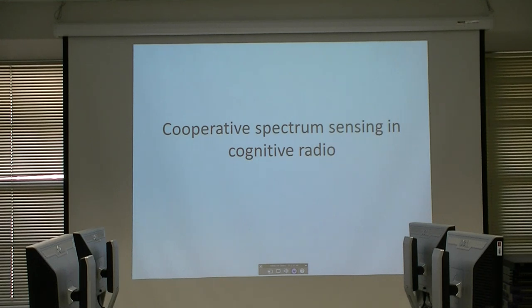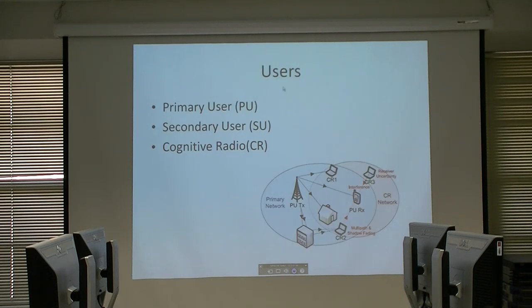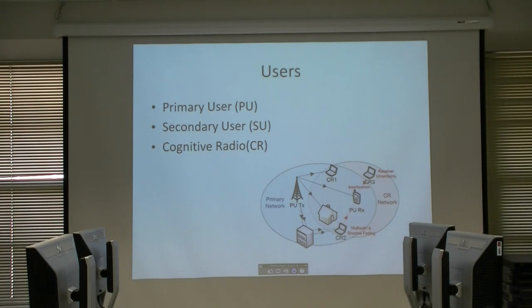First I will define some concepts in Cognitive Radio, and then go through the issues. It's important to define the types of users. The primary user is the user assigned a licensed frequency band — for example, TV or mobile cell phones. The secondary user can be a wireless network whose users try to communicate together.